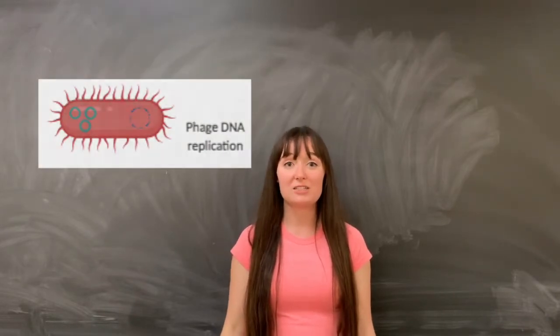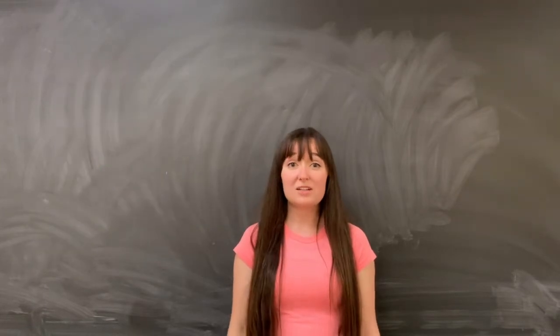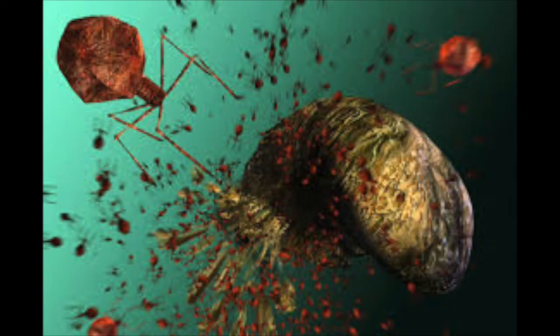They then hijack the bacterial cell's machinery to build new phages. When the bacteria is full of new phages, the phages release a toxin to blow up the bacteria, and then they move on to a new target.